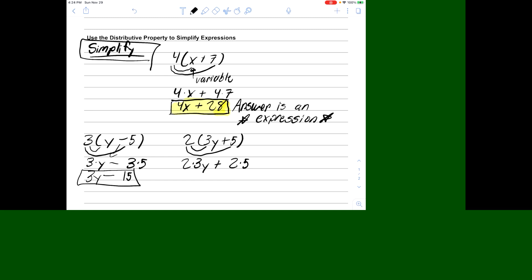2 times 3y, I don't know what y is, but I can do 2 times 3. 2 times 3 is 6y. 2 times 5 is 10. I can't add 6y with 10. So now, my answer.